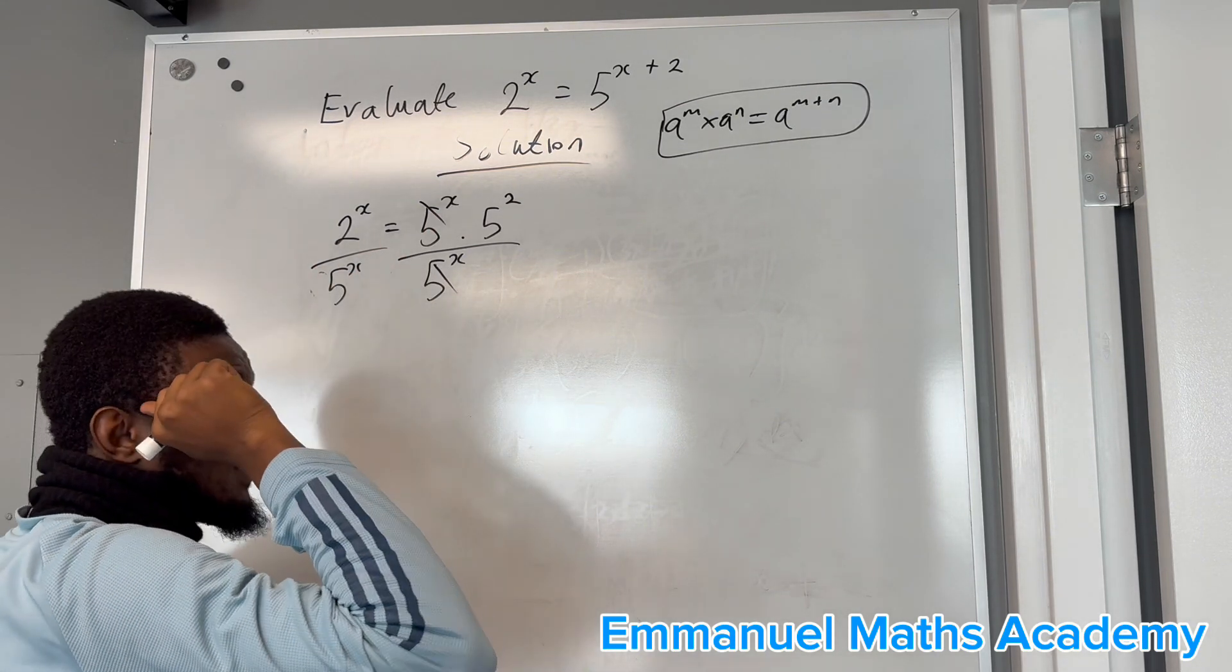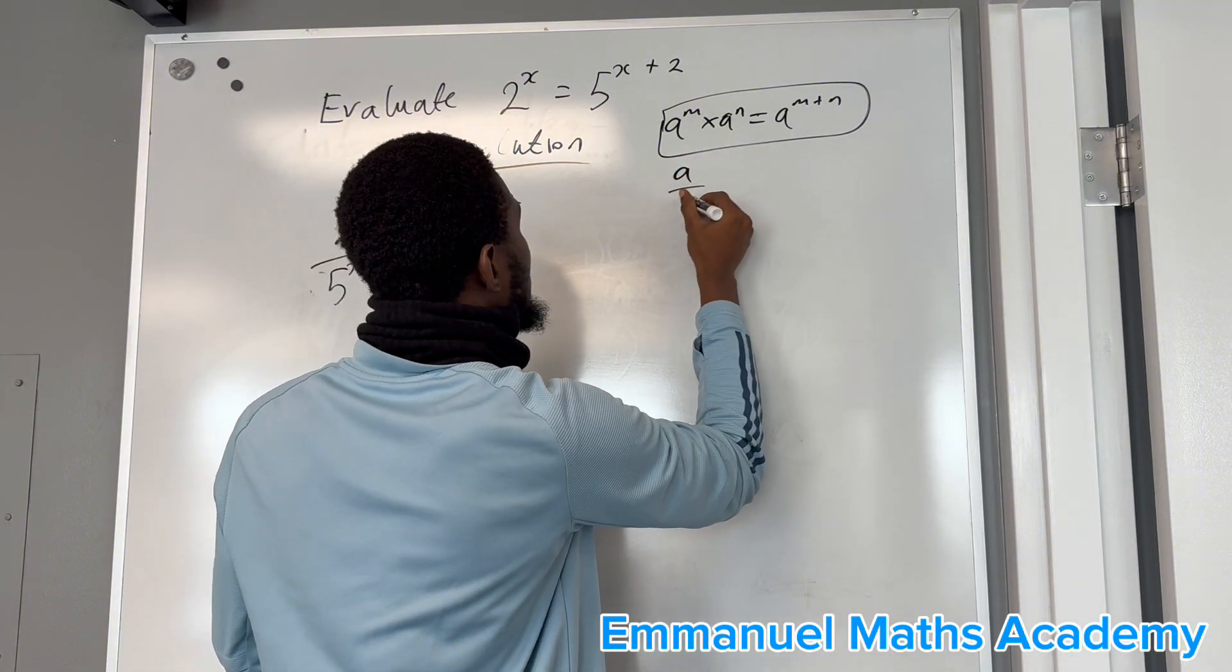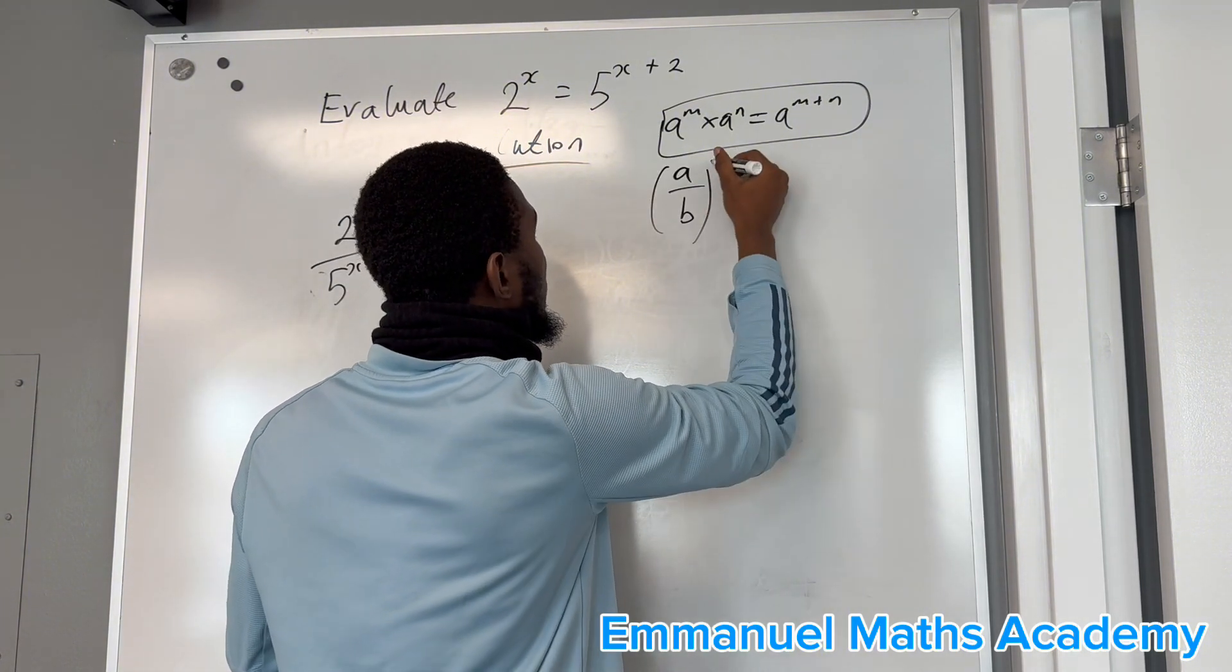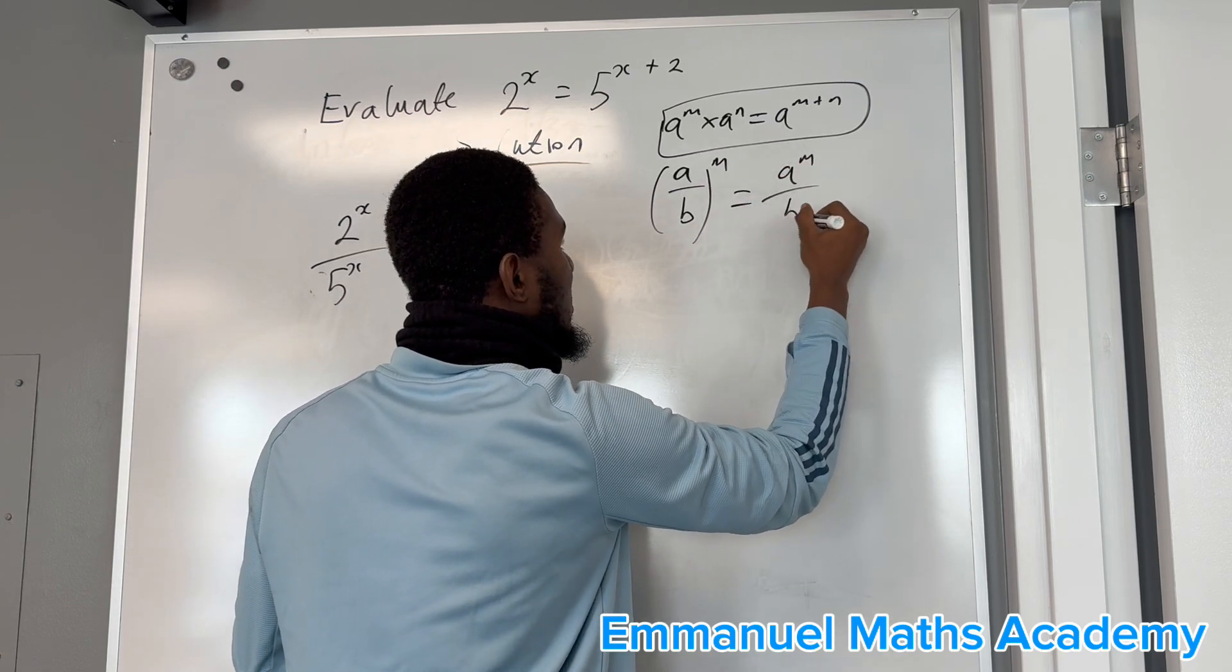And again, from the law of indices, remember that a over b raised to power m equals a power m over b power m.